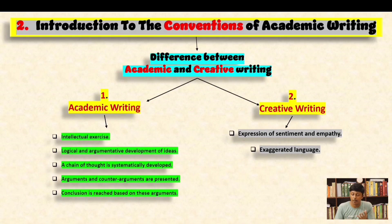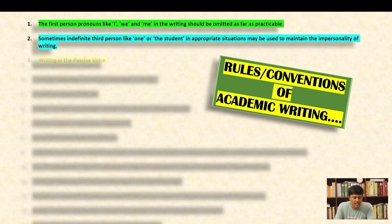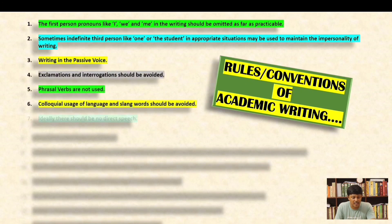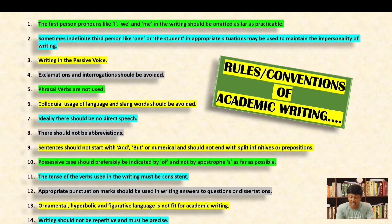You can give examples from the previous video or create your own. Now let us move on to the rules or conventions of academic writing. There are several — 14 to 15 points that you need to understand. These 14 points, from first to fourteenth, we have to understand very meticulously, and by the end of this video we will be able to understand all of them.